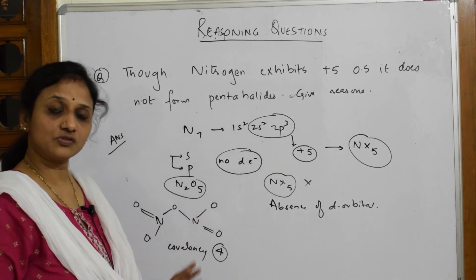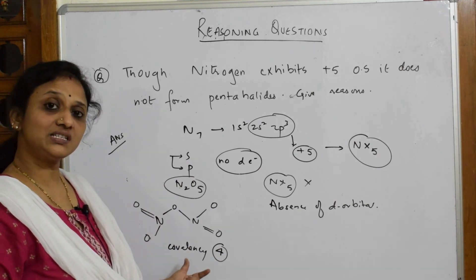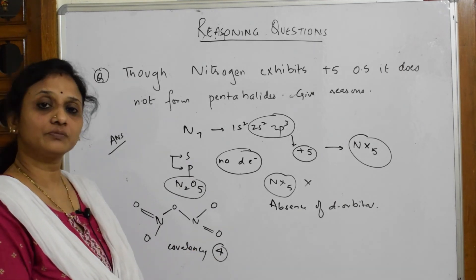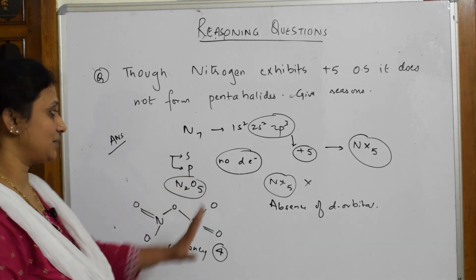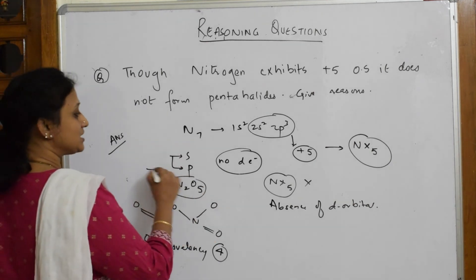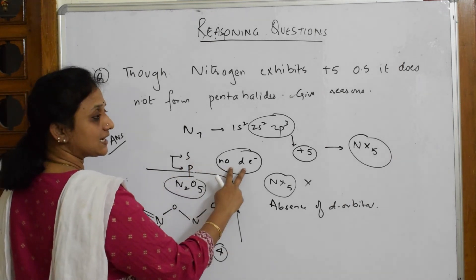Though it has five electrons, although it can show +5, the number of bonds or covalency it can extend is only till four. So this is one of the main reasons I'm relating both examples. It has only s and p electrons, it doesn't have d orbital, so it can't extend its electrons. Hence, it cannot form NX₅.